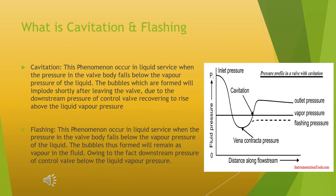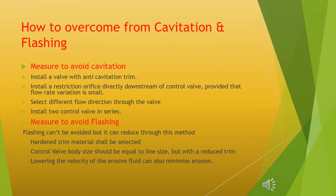What is cavitation and flashing? Cavitation: this phenomenon occurs in liquid service when the pressure in the valve body falls below the vapor pressure of the liquid. The bubbles which are formed will implode shortly after leaving the valve, due to the downstream pressure of the control valve recovering to rise above the liquid vapor pressure. Flashing: this phenomenon occurs in liquid service when the pressure in the valve body falls below the vapor pressure of the liquid, but the bubbles remain as vapor in the fluid because the downstream pressure of the control valve remains below the liquid vapor pressure.